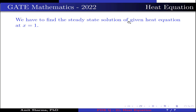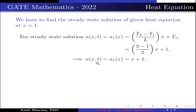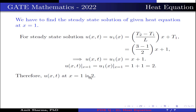We need to find the steady state solution at x = 1. For the steady state solution, u(x) = u₁(x) = (T₂ − T₁)/l · x + T₁. Substituting T₁ = 1, T₂ = 3, and l = 2, we get u₁(x) = (3 − 1)/2 · x + 1 = x + 1. Therefore, u(1) = u₁(1) = 1 + 1 = 2. Hence, option b is correct.